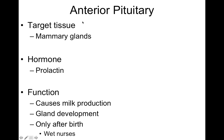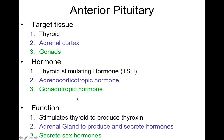Another anterior pituitary hormone is prolactin. This is the one that actually causes milk production, targeting the mammary glands. It generally only functions after someone has given birth — this is why wet nurses, women who've already had babies, can nurse other people's babies.